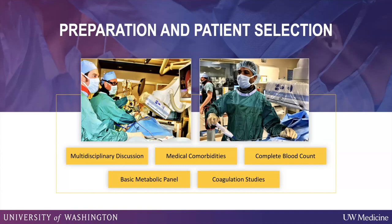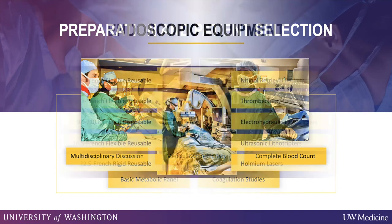Most patients we perform endoscopic interventions on typically have multiple comorbidities. They're poor cardiac or anesthetic patients, so they come to us instead of undergoing surgery. We get our standard workups: blood counts, basic metabolic panels, and coagulation studies, just like we do for any interventions we perform.